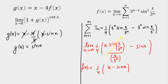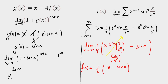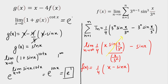Our objective now is to calculate the limit as x → 0 of (1 + g(x))^(cot x) = (1 + sin x)^(cot x). This is a 1^∞ indeterminate form, since sin x → 0 and cot x → ∞ as x → 0. Using the standard result, this equals e raised to the power of limit as x → 0 of sin(x) · cot(x). Since sin x · cot x = sin x · (cos x / sin x) = cos x, this limit equals e^(cos 0) = e^1 = e.